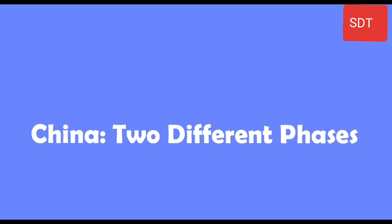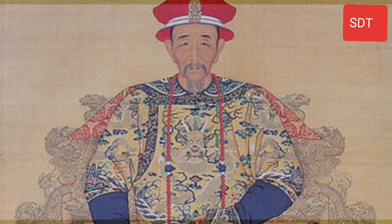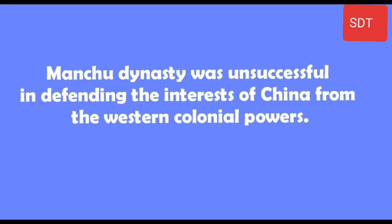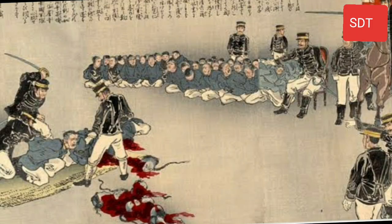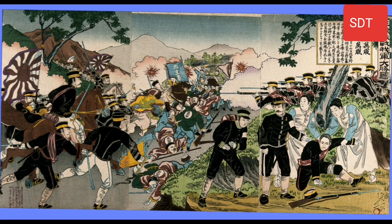China: Two Different Faces. At the beginning of the 20th century, China was ruled by emperors of the Manchu dynasty. The Manchu dynasty was unsuccessful in defending the interests of China from the western colonial powers. These powers had become very powerful and influential in different parts of China.